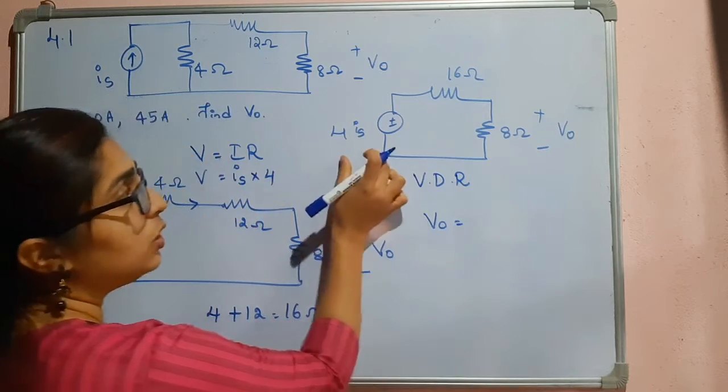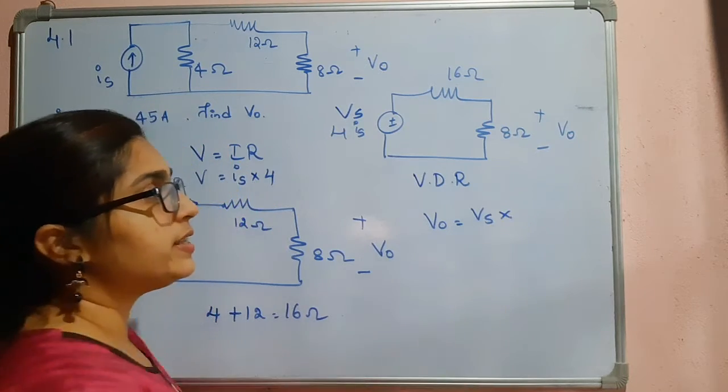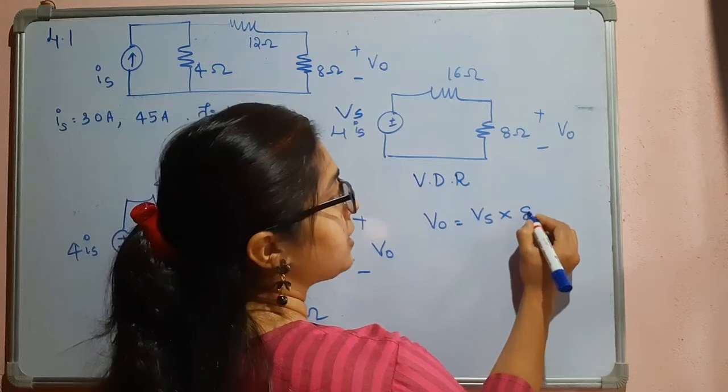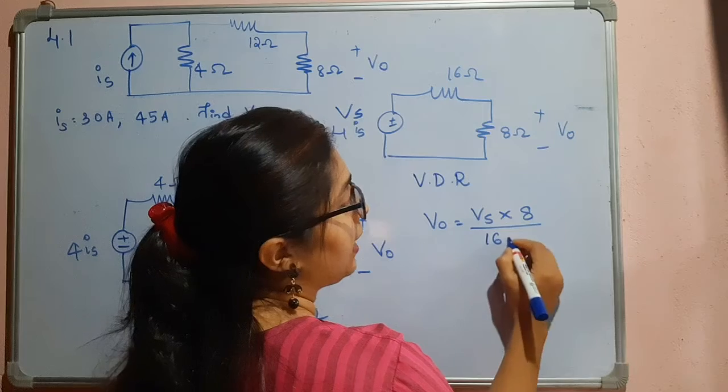This is your Vs. So Vs into the resistance across which the voltage is being measured, that is 8 ohm, divided by the total resistance. So this is 16 plus 8.